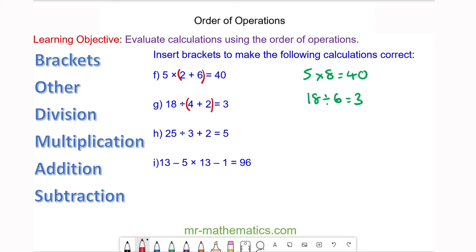For question h, the bracket is before the 3 and after the 2, and 25 ÷ (3 + 2), which is 5, does make 5.